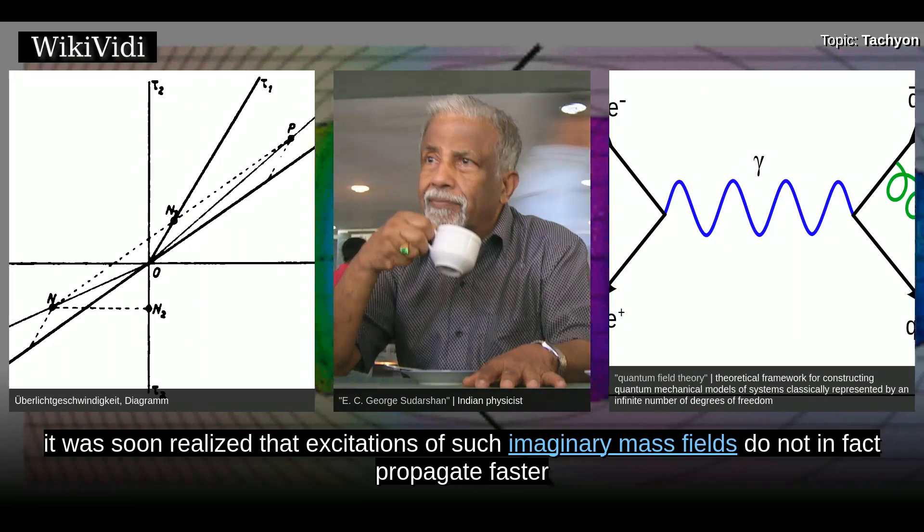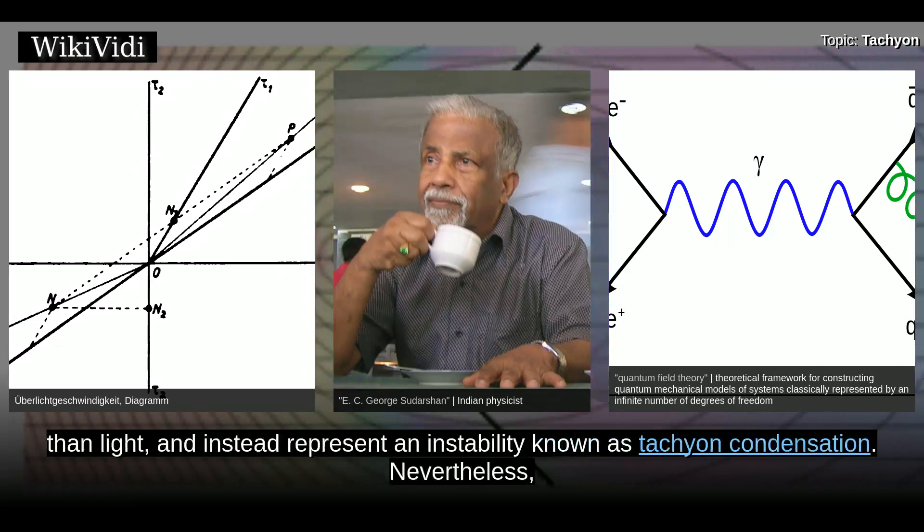However, it was soon realized that excitations of such imaginary mass fields do not in fact propagate faster than light and instead represent an instability known as tachyon condensation.